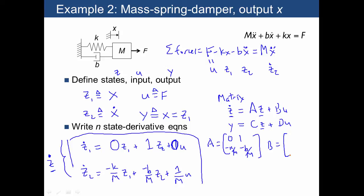What's our B matrix? Our B matrix is going to be 0 and 1 over m. The C matrix is just defining our output as z1, so that's going to be equal to 1 times z1 plus 0 times z2. And then our D matrix, the output doesn't actually include u at all, so that's just going to be equal to 0.